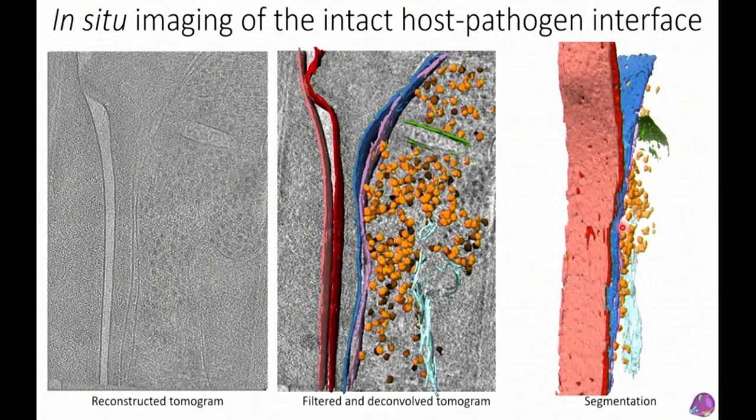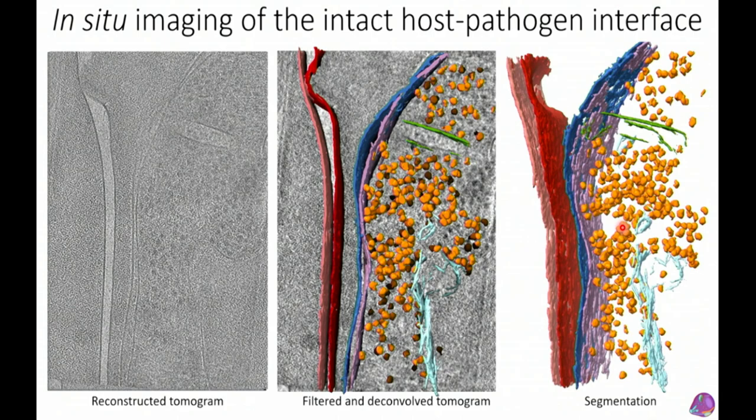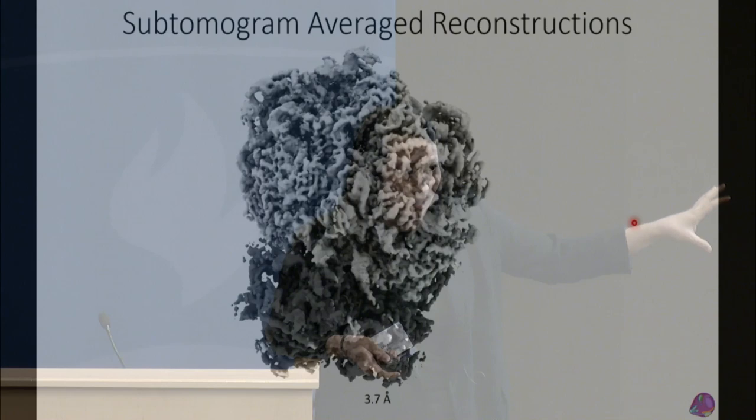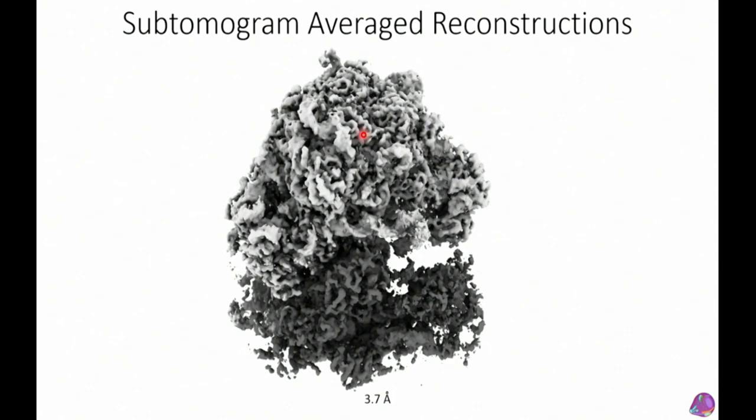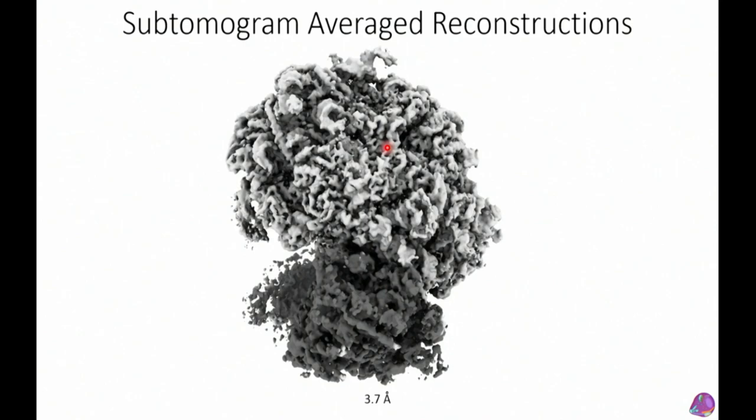So we box out every single ribosome and perform subtomogram averaging — aligning all particles together and averaging them to boost the signal-to-noise ratio for higher resolution. The result is a 3.7 Å reconstruction of the ribosome as it exists inside the cell, where you can see all the RNA helices and even bumps on alpha helices indicating sidechains — amino acid resolution detail.